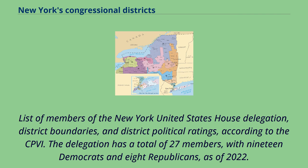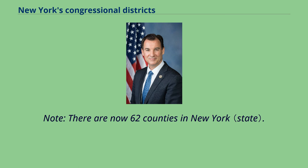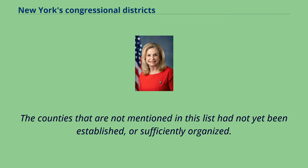List of members of the New York U.S. House delegation, district boundaries, and district political ratings according to the CPVI. The delegation has a total of 27 members, with 19 Democrats and 8 Republicans as of 2022. Note: there are now 62 counties in New York. The counties that are not mentioned in this list have not yet been established or sufficiently organized.